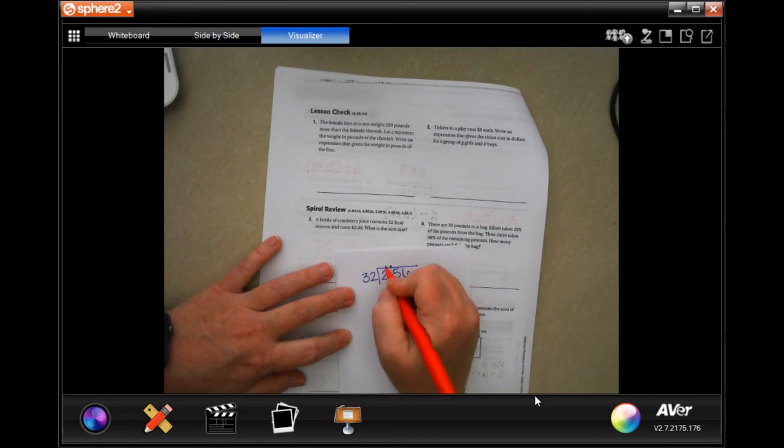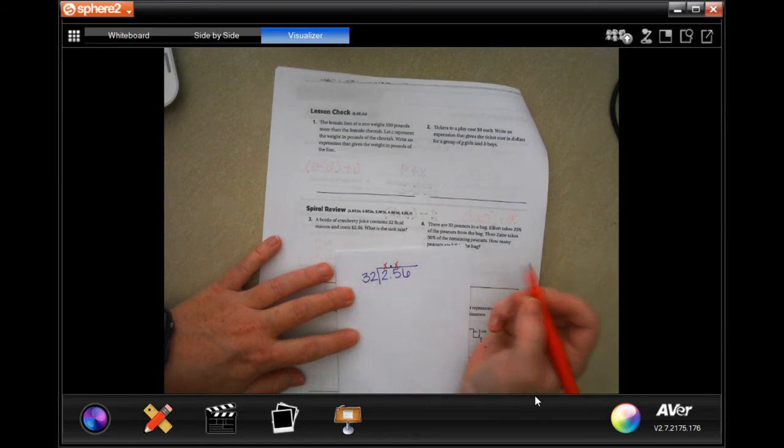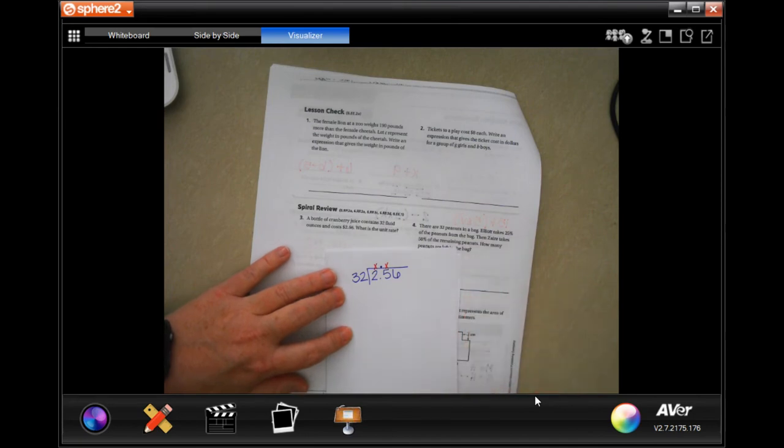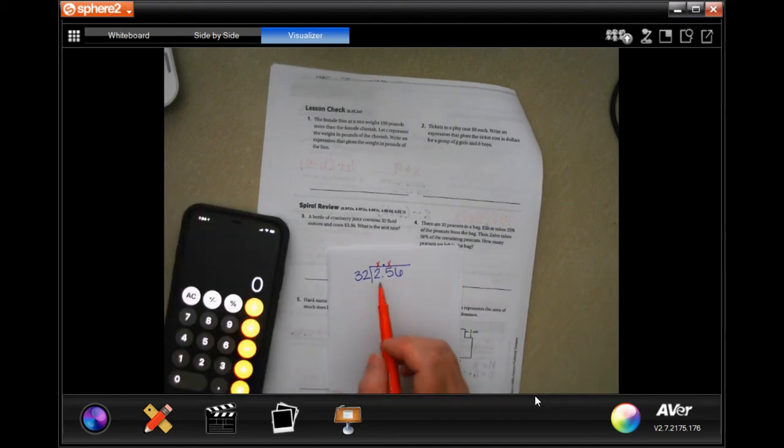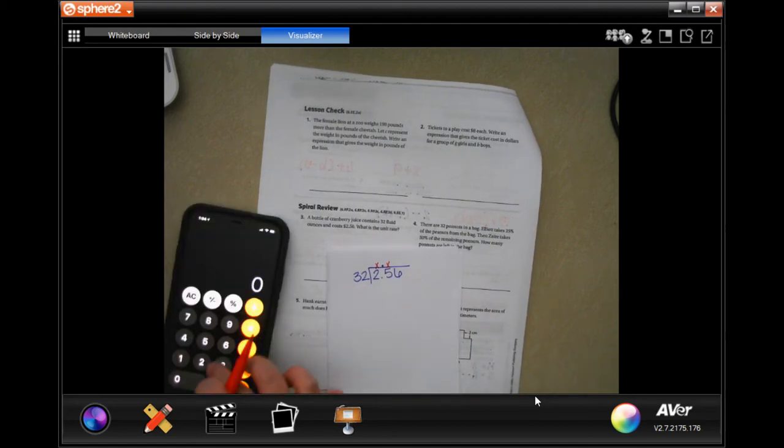32 is not going to go into two. It's also not going to go into 25, which means I need to do some math. So I'm going to use my handy-dandy calculator, not to do the math, but just to multiply 32 so that I get close to 256 because it's not going to go into 25.